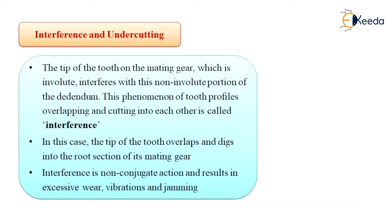In some cases, the addendum is so large that it extends below the base circle. In such a situation, the portion of the tooth below the base circle is not involute. The tip of the tooth on the mating gear, which is involute, interferes with the non-involute profile of the addendum. This phenomenon of tooth profiles overlapping and cutting into each other is called interference.